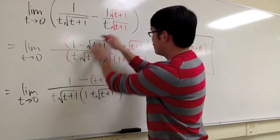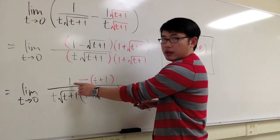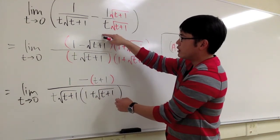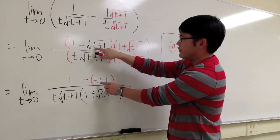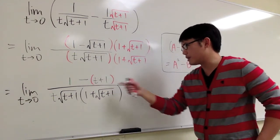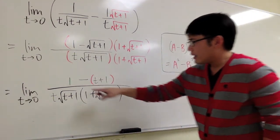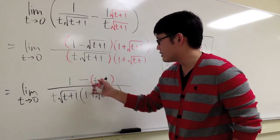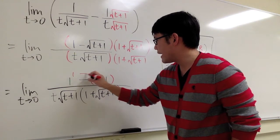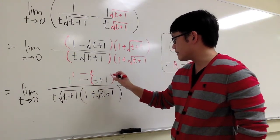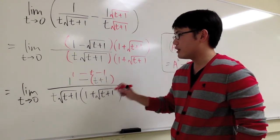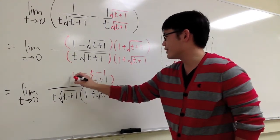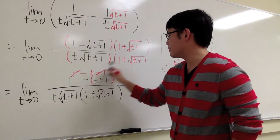After multiplying the top, we have 1 minus (t plus 1). This simplifies: 1 minus t minus 1, so the 1 and minus 1 cancel to give negative t. We can cancel the t on top with the t in the denominator.